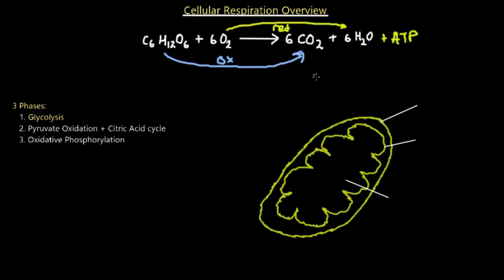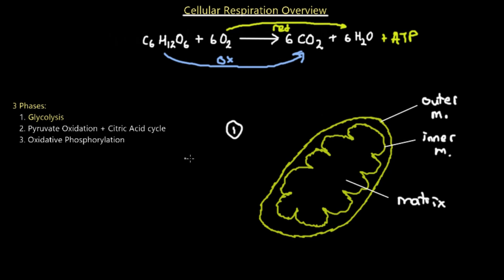The primary organelle for cellular respiration is the mitochondria. The mitochondria has two membranes: an outer membrane and an inner membrane, and many reactions happen within these membranes. There is also the mitochondrial matrix. Glycolysis occurs in the cytosol — outside the mitochondrion, in the cytoplasm of the cell. The products of glycolysis enter the matrix by passing through the outer membrane and then through a transporter across the inner membrane into the matrix.